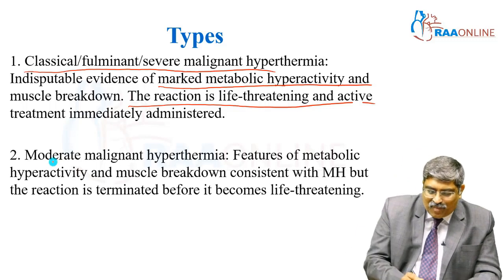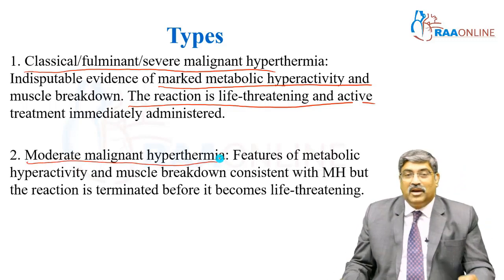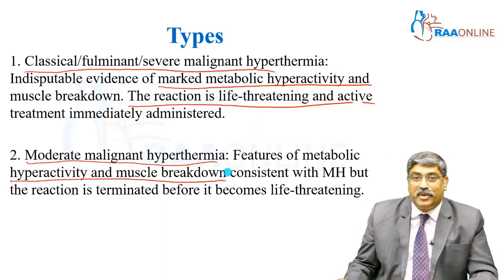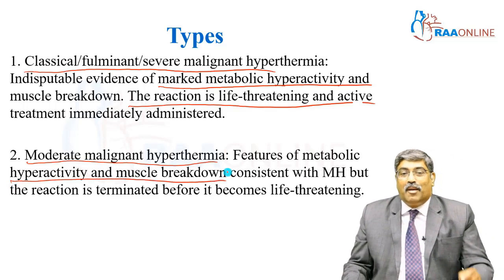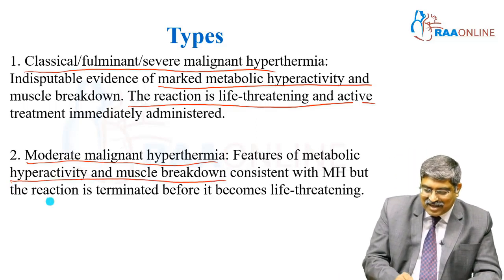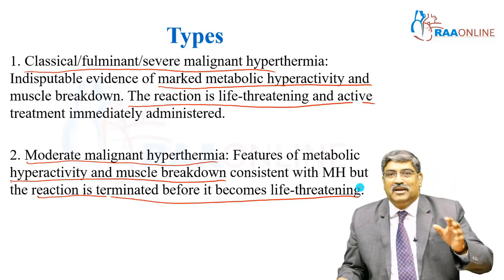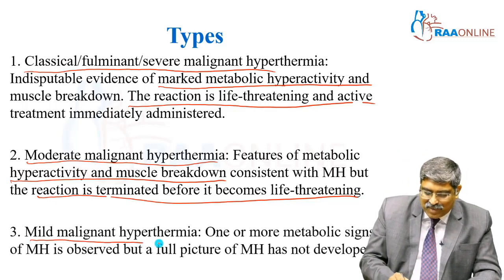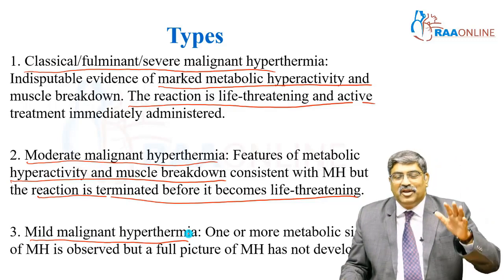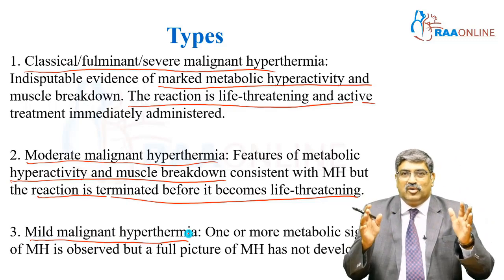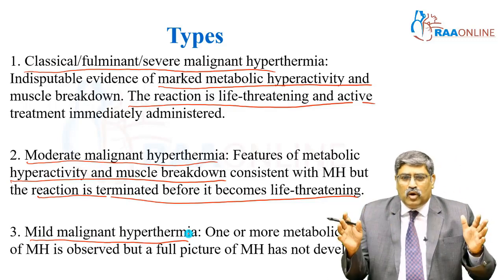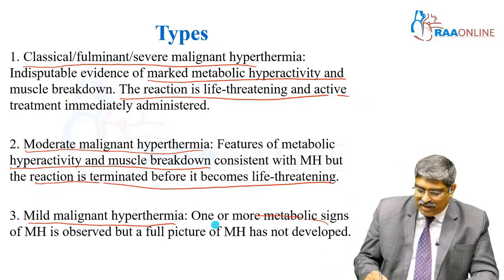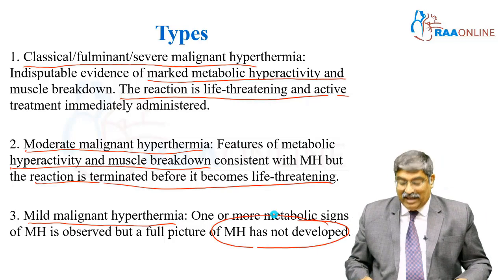The second type is moderate malignant hyperthermia. Here there are features of metabolic hyperactivity as well as muscle breakdown, but the reaction is terminated before it becomes life-threatening. Third is mild malignant hyperthermia, where you have metabolic signs like acidosis or low ATP, but a full picture of malignant hyperthermia has not developed.